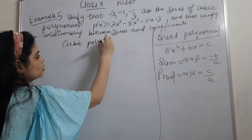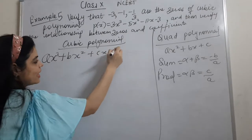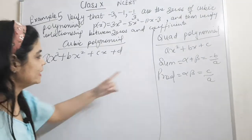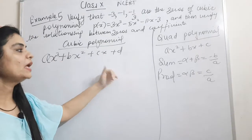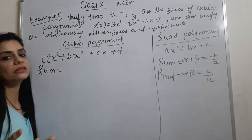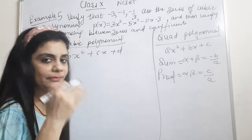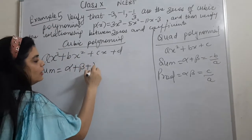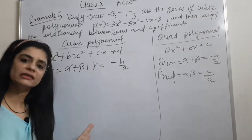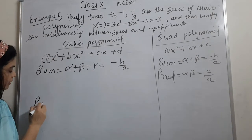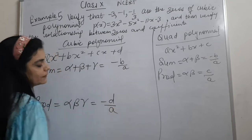The general form of a cubic polynomial is ax cubed plus bx squared plus cx plus d. A cubic polynomial has three zeros: alpha, beta, and gamma. The sum alpha plus beta plus gamma equals minus b upon a — same formula as quadratic. The product of all three, alpha times beta times gamma, equals minus d upon a.